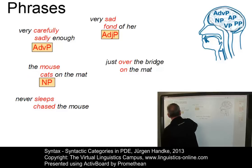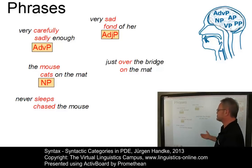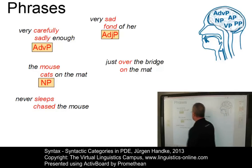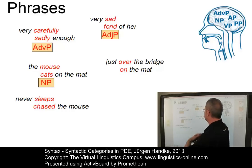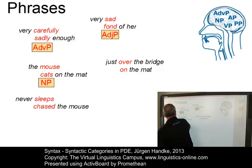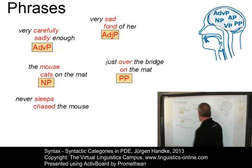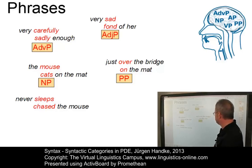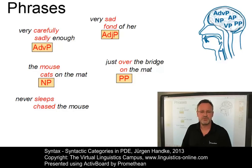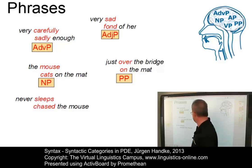In a noun phrase, the noun is the head: the mouse, or cats on the mat. In one case we have a pre-modifier; in the other, a post-modifier. You could also have the strong cats on the mat, with both. In a prepositional phrase, the preposition is the head — it determines the prepositional content, and in some languages it even determines the case. This is why prepositions are heads within prepositional phrases.